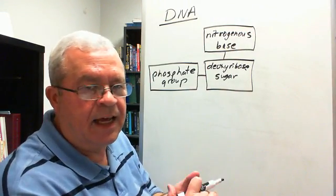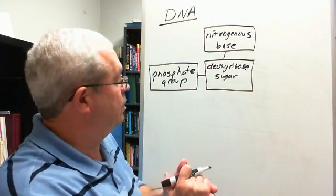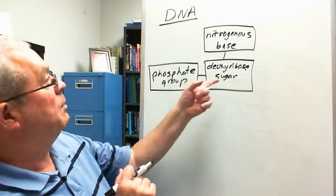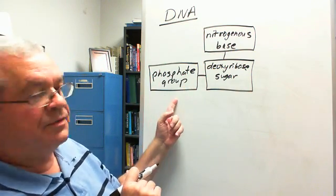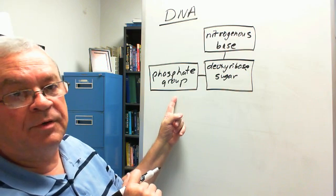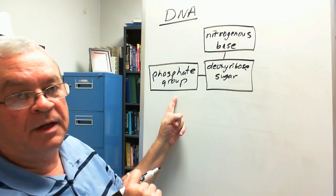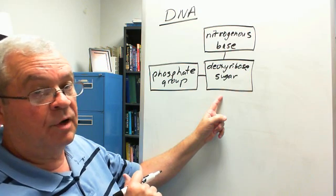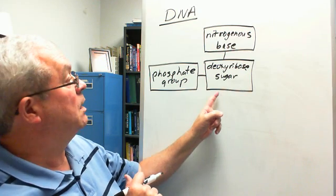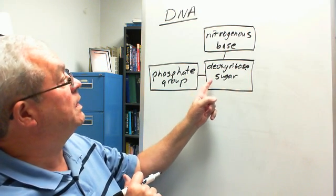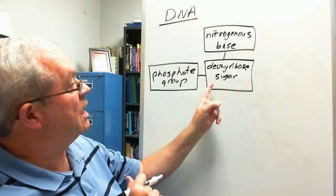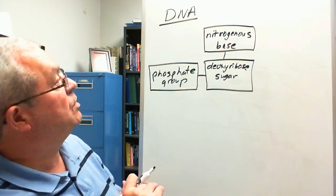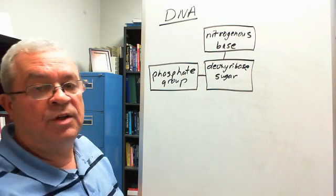Now we're going to discuss DNA in particular. We already know quite a bit about DNA — we know about its nucleotide. It has a phosphate group that's exactly the same as the RNA phosphate group, but it's got a different sugar than RNA. The sugar group for DNA nucleotides is deoxyribose. And that brings us to the nitrogenous bases.